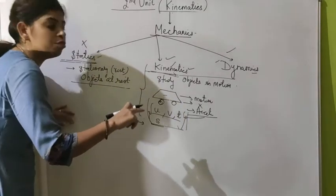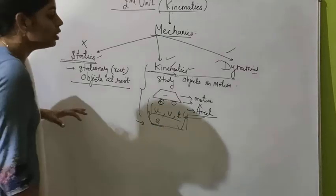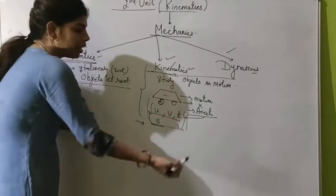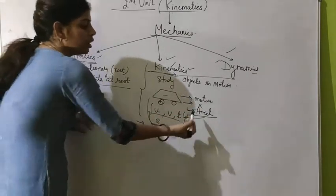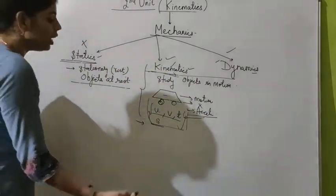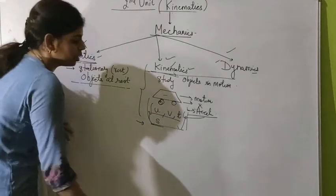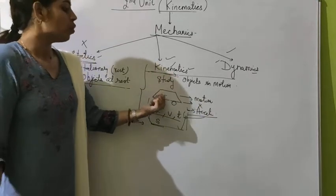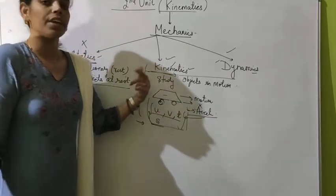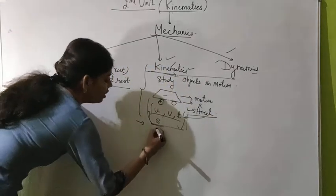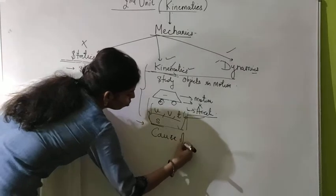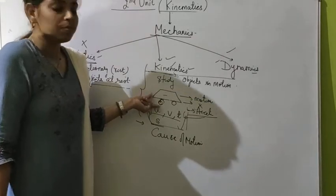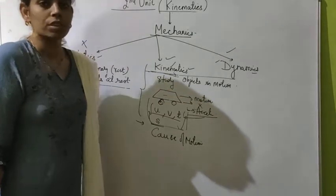What we do not study under kinematics is the cause of motion. For example, why did the vehicle stop? Why did it accelerate again? We do not study the cause of the motion or stoppage. The main thing — force — is the cause behind why the vehicle stopped, why it accelerated.